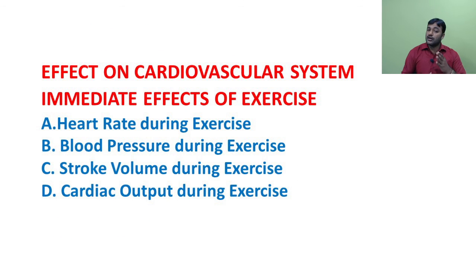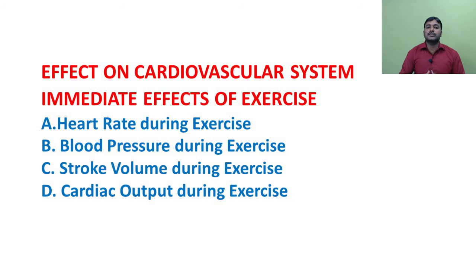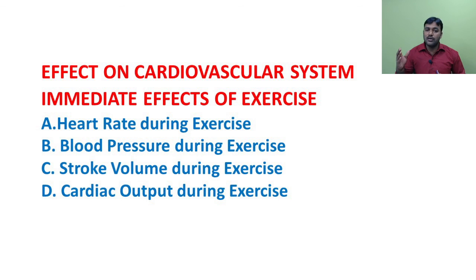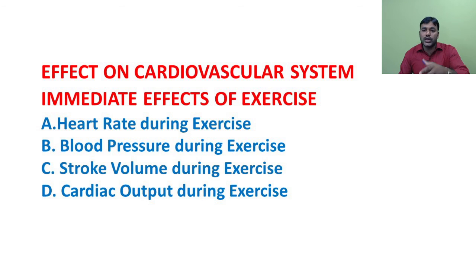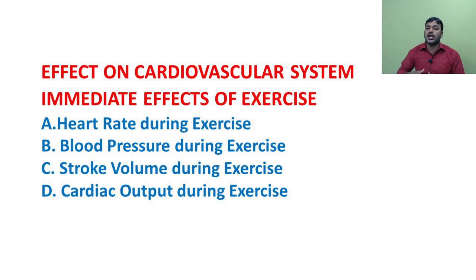Next: effect of exercise on the cardiorespiratory system. Whenever we perform strenuous exercise, the demand for oxygen increases. During exercise, the supply of oxygen to the muscles is an urgent need, as oxygen cannot be stored in muscles. Hence, the heart functions faster, increasing systemic circulation as well as pulmonary circulation.